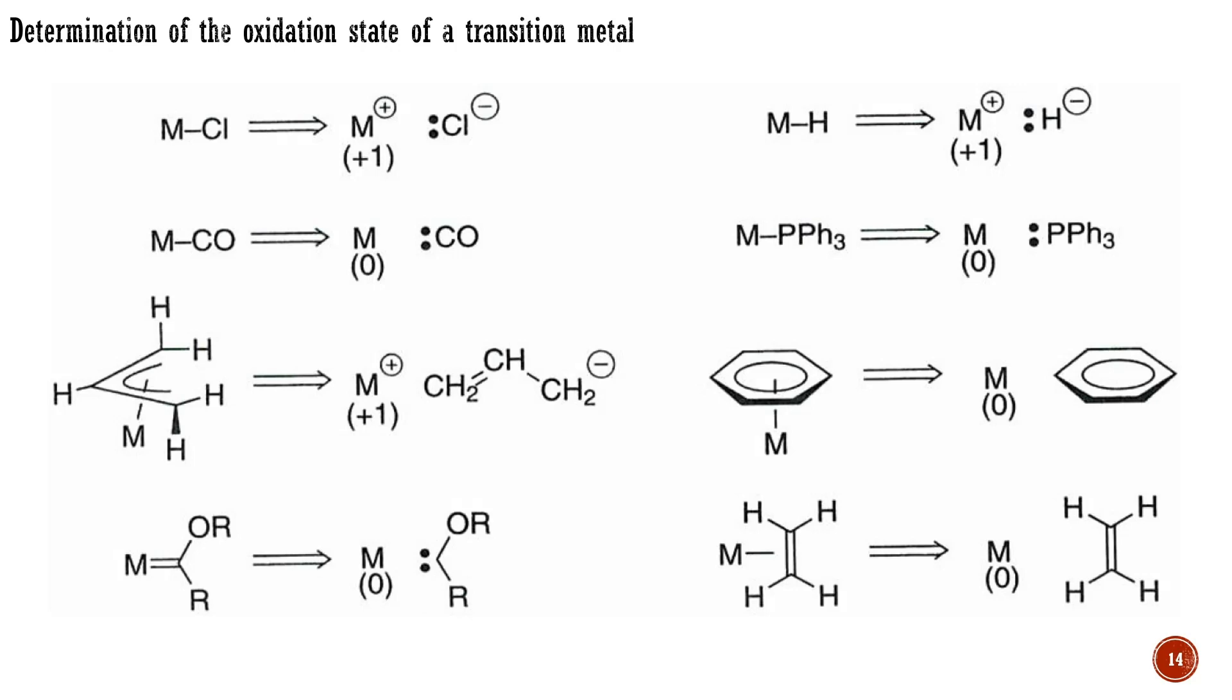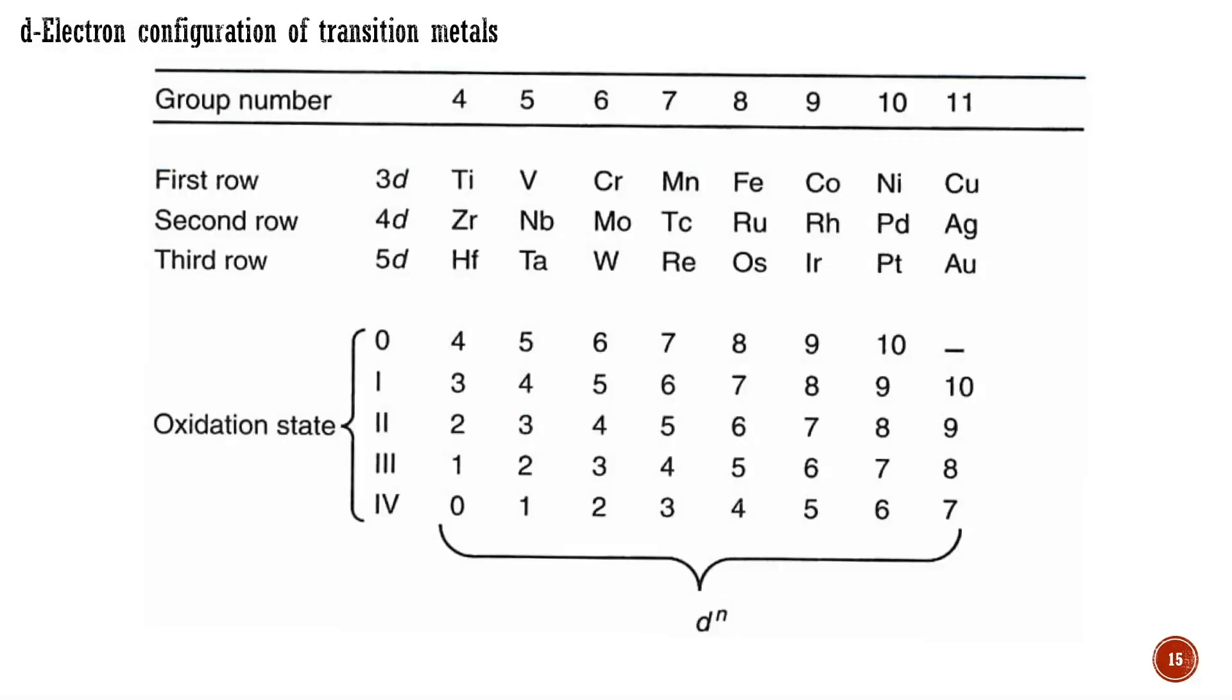In metal hydrides, for example, the hydride ligand is always formally considered to be H-, even though some transition metal hydrides are strong acids. Despite this, the formalism is still useful. Having assigned the oxidation state of the metal in a complex, the number of d-electrons on the metal can easily be assessed by referring to the periodic table.